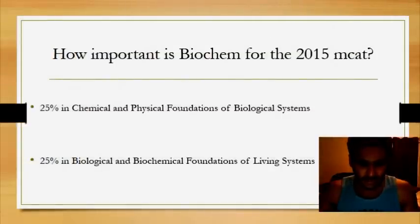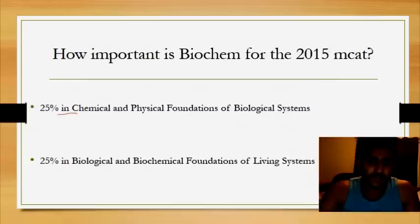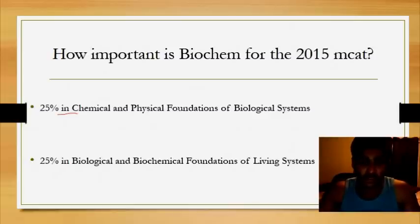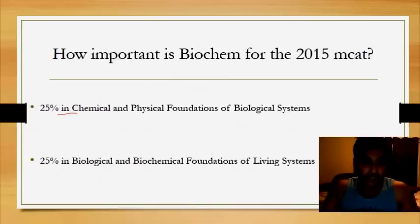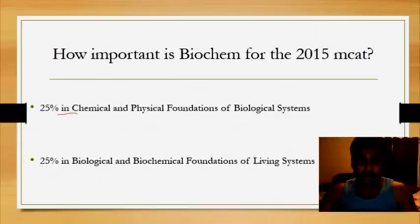Why is biochem important for the MCAT, especially the 2015 one? The MCAT consists of four sections: chemical and physical foundations of biological systems, biological and biochemical foundations of living systems, psychology and social sciences, and CARS. The first two sections each consist of about 25% biochem, so there's about 50% of biochem-related questions on the MCAT. It's really important to get the basic concepts of biochemistry down before walking into the testing center.